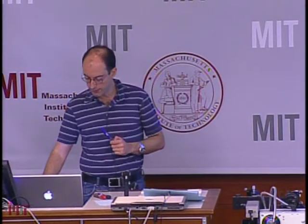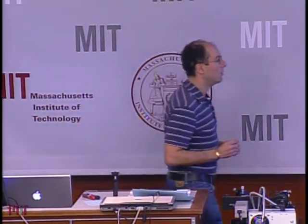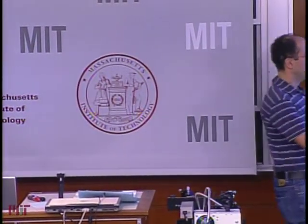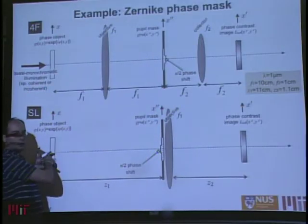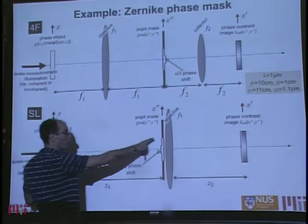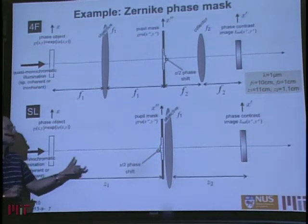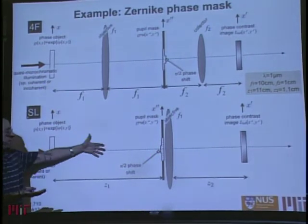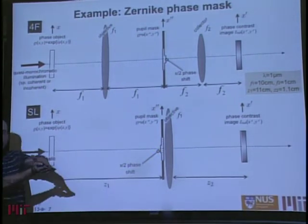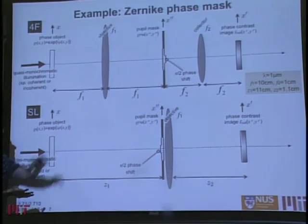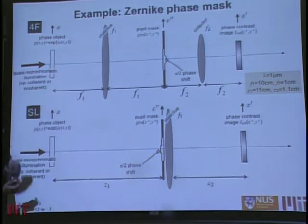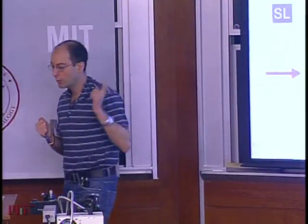The 4F system has a larger ATF extent because the distance from object to aperture is just f1, the focal length, which is shorter than z1 in the single lens system. So the same physical aperture gives different numerical apertures in the two systems. This means the 4F system gives a narrower PSF and better resolution.